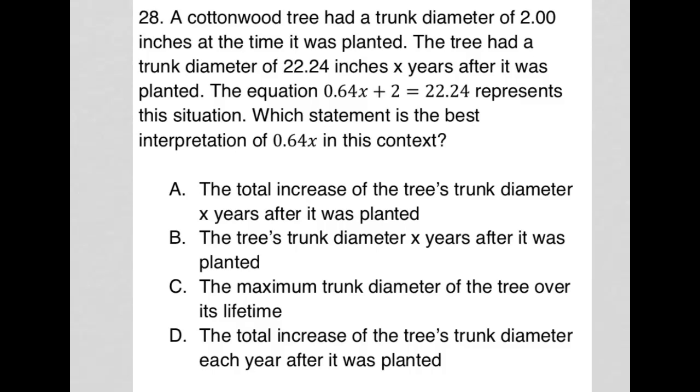So this question looks like it's going to be a translate word problem question. The question says a cottonwood tree had a trunk diameter of two inches at the time it was planted. So I'm going to just write D equals two, and I'm going to say when planted. That's important, I'm sure, or I assume.